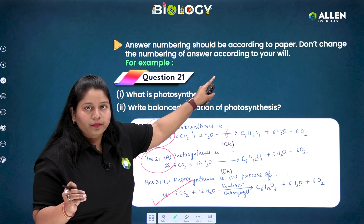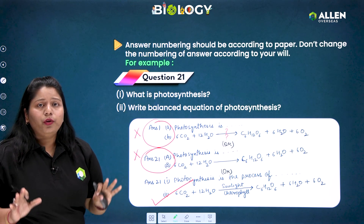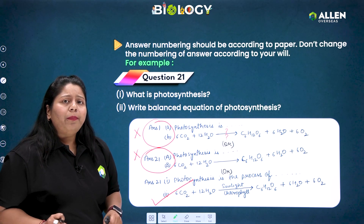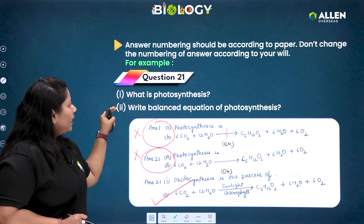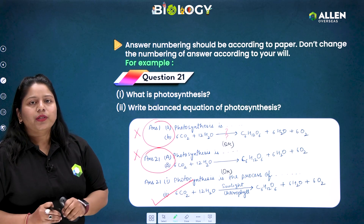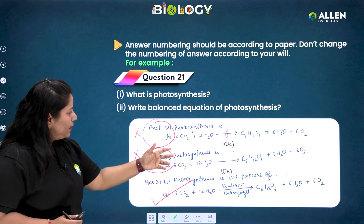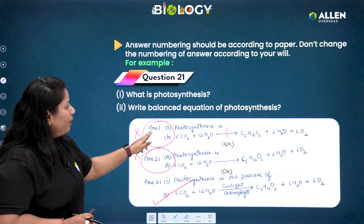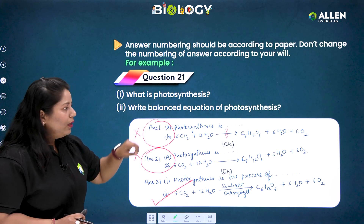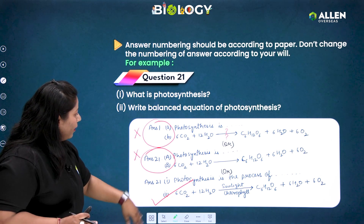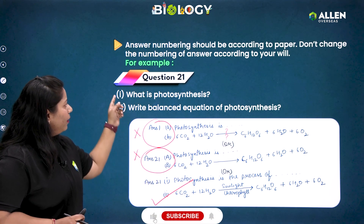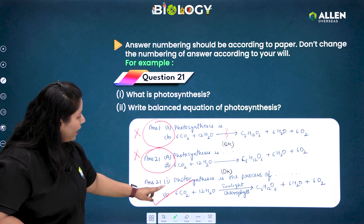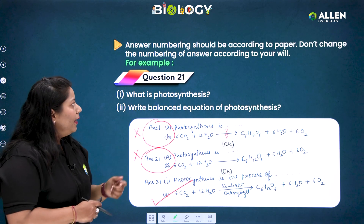When writing answers, answer numbering should be according to the paper — don't change the numbering of answers according to your own preference. For example, if it is question number 21 in your science paper with two subparts — first part asking 'what is photosynthesis' and second part asking to write the balanced equation — answer numbering should be 21, and subparts should be labeled correctly as per the question, not arbitrarily as A and B.